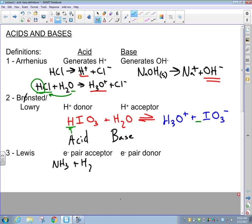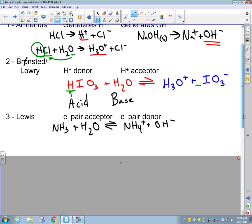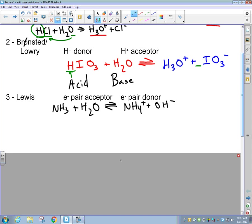Our example here is going to be NH3 reacting with H2O. That happens in equilibrium and we produce NH4+ and OH-. I think it's best understood when you look at the Lewis definition to actually look at the Lewis dot structures of these two molecules.